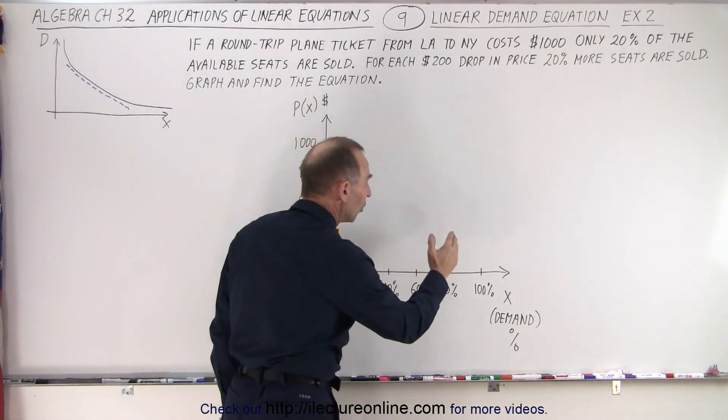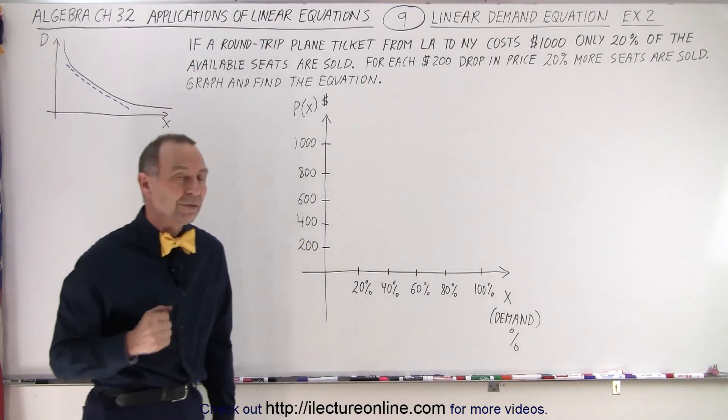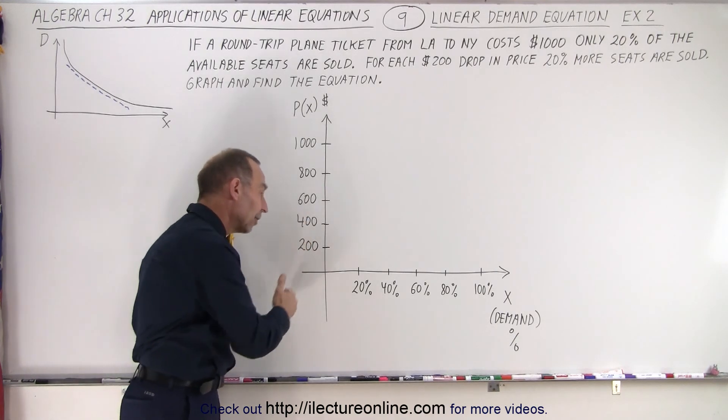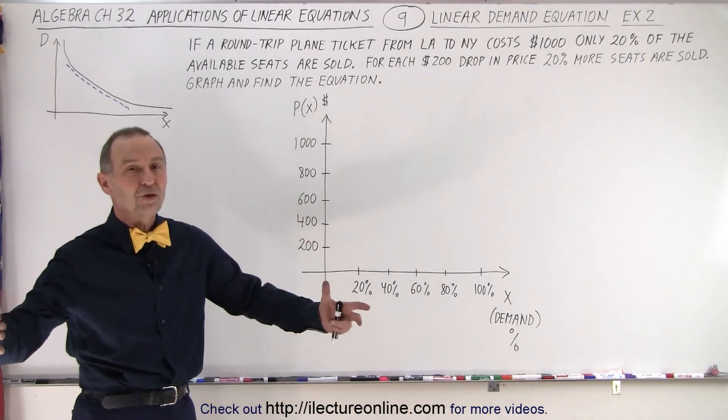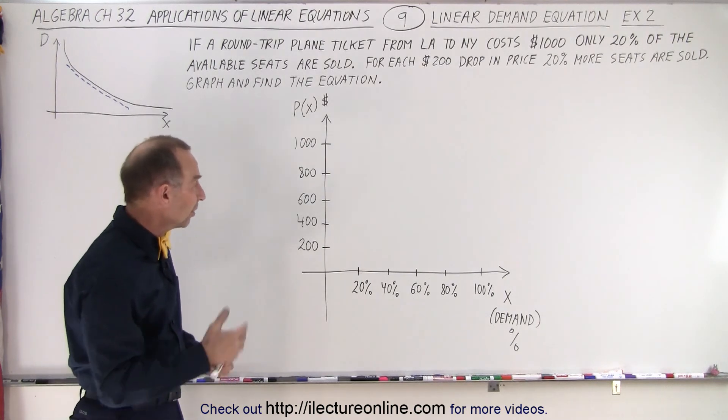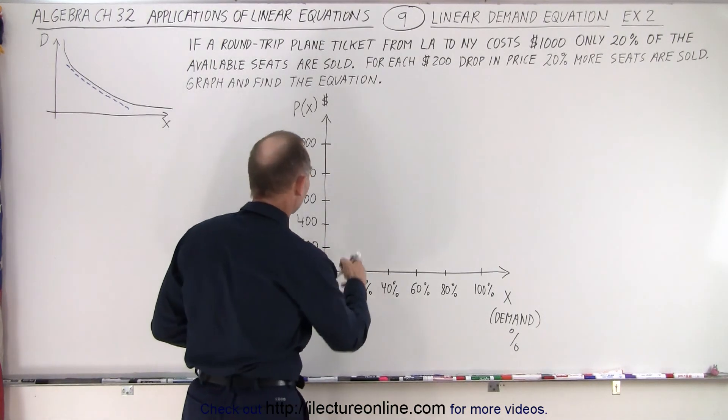when you get to a low enough price, 100% of all the seats will be filled and you can't go all the way down to zero because there's only so much you can provide. There's only 100% of the seats. So let's try to graph that and see what that looks like.